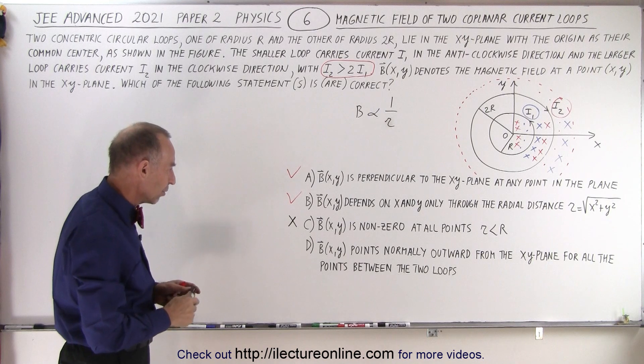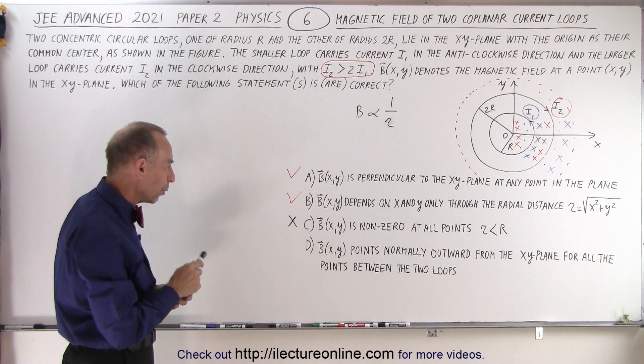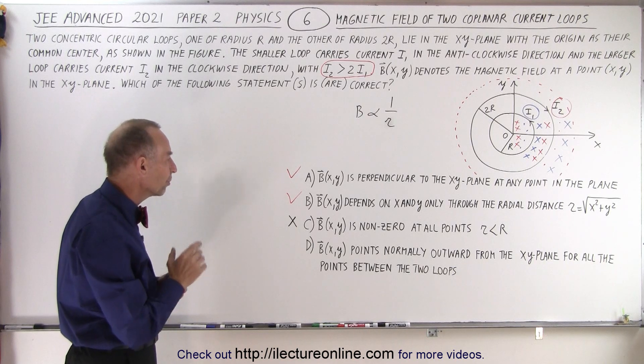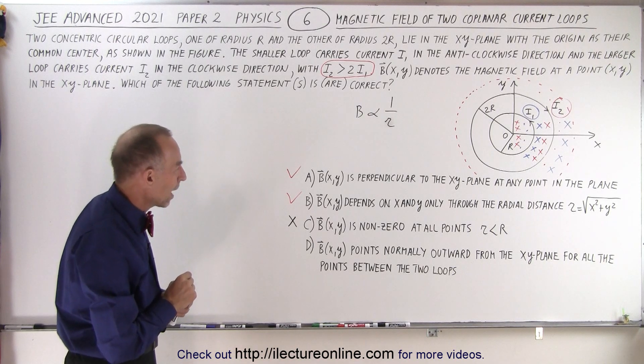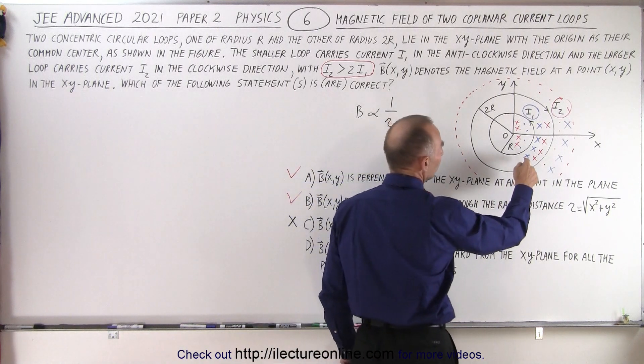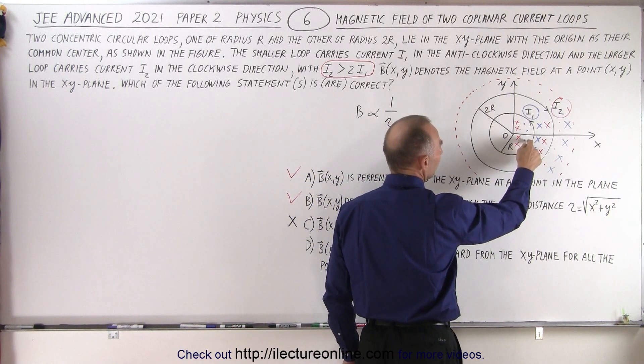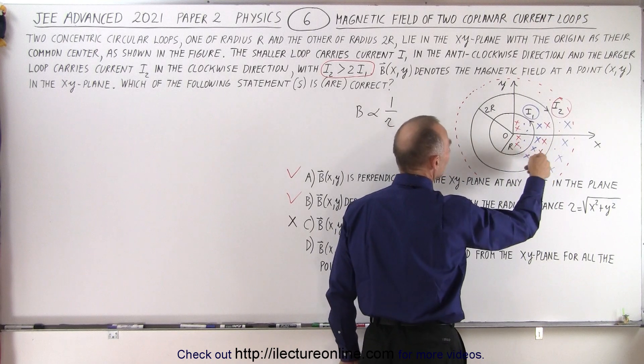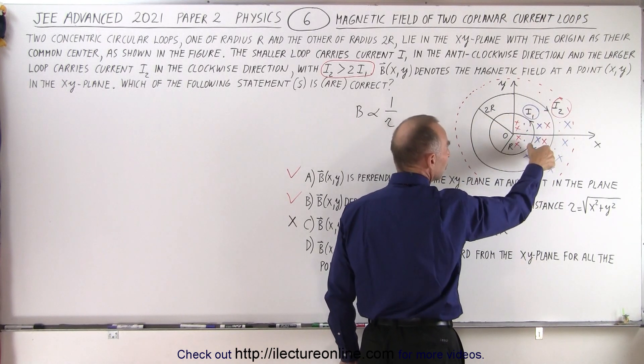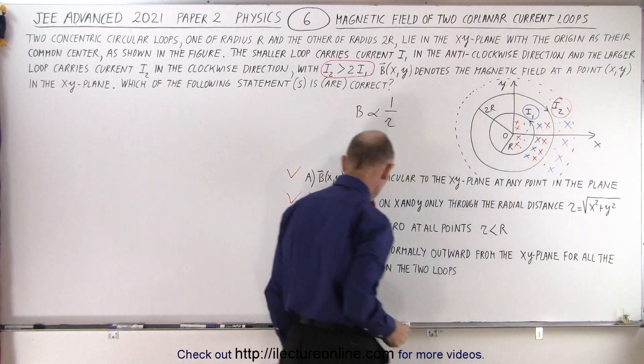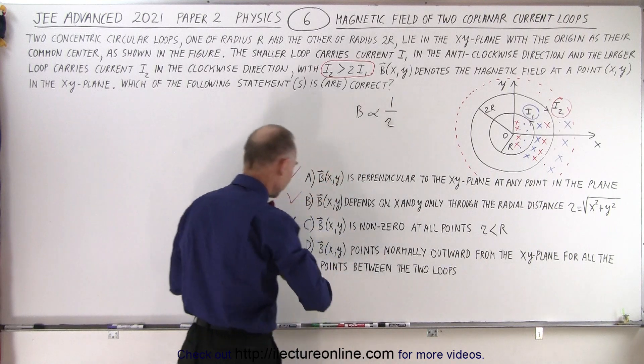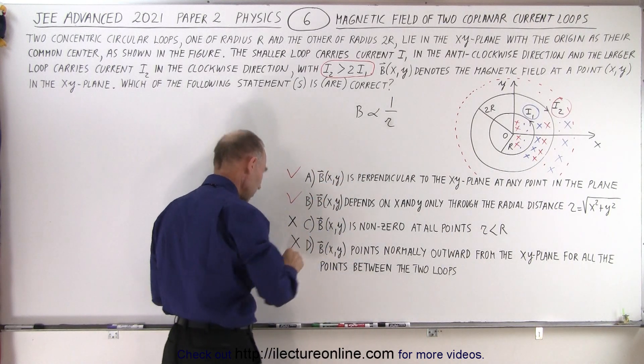And finally, for the last statement, the magnetic field points normally outward from the XY plane for all the points between the two loops. Now, points outward, but notice that the magnetic field for the inner loop, from the inner loop, is pointing into the board, and the magnetic field for the outer loop is pointing into the board. So between the two loops, it's always into the board, and so here it says it points normally outward from the XY plane, so you know that this is also an incorrect statement.